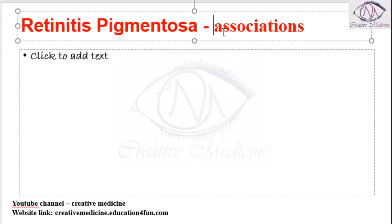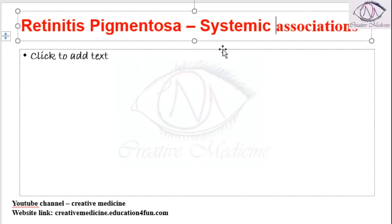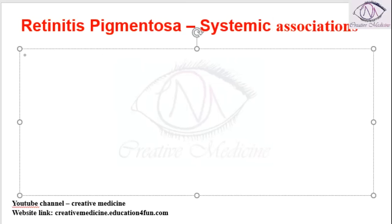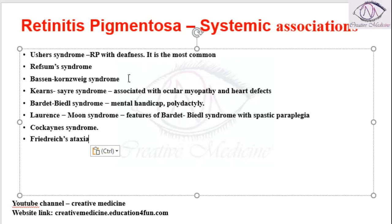Now we have systemic associations of retinitis pigmentosa. The systemic associations consist of different syndromes. We have Usher syndrome, where retinitis pigmentosa is present with deafness, and it is more common.